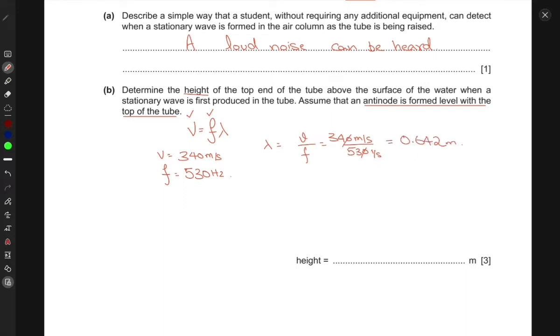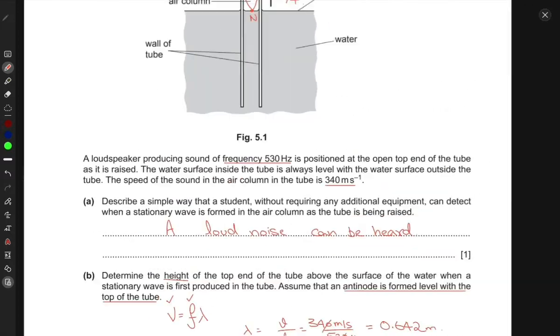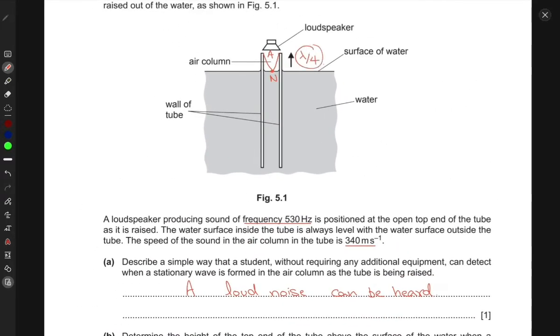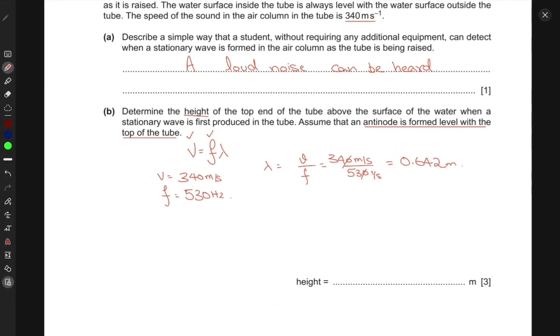If I have the wavelength, I know that the height of the top end of the tube above the water surface is lambda over 4. So the height h equals lambda over 4, which is 0.642 over 4 meters, equals 0.161 meters. The height is 0.161 meters.